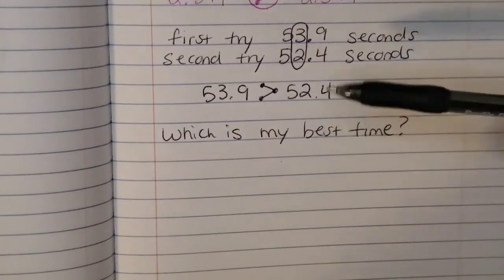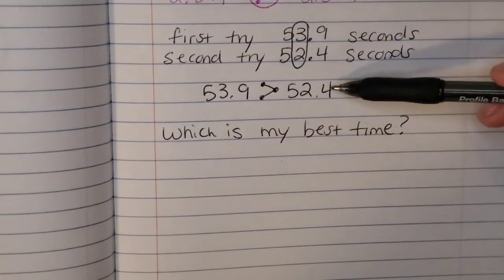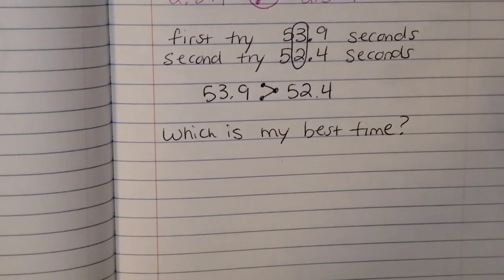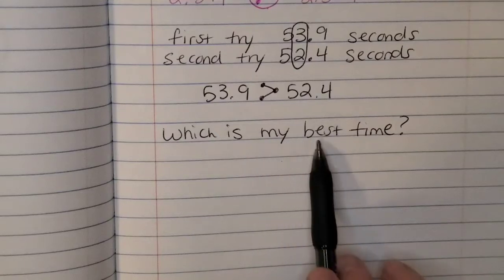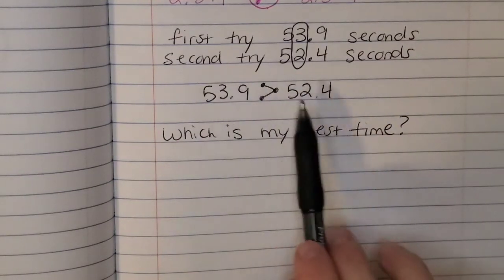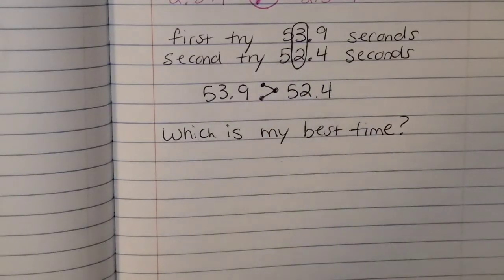All right, now that we've found out that 53 and 9 tenths is greater and 52 and 4 tenths is least, I want you to answer this question, which is my best time? So I want you to stop and think for a minute, which one of these is my best obstacle course time?